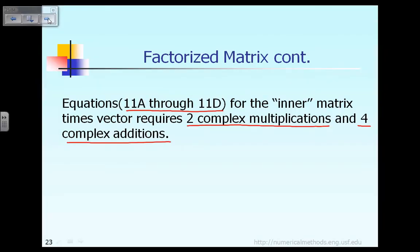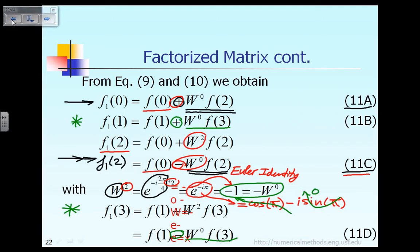We need two multiplications and four additions. The first multiplication is shared and doesn't need to be counted twice. The second multiplication involves w0 times f(3), appearing in both equations 11b and 11d. We need four additions: one in equation 11a, one for 11b, one addition or subtraction for 11c, and one for 11d. So totally, two multiplications and four additions are required.